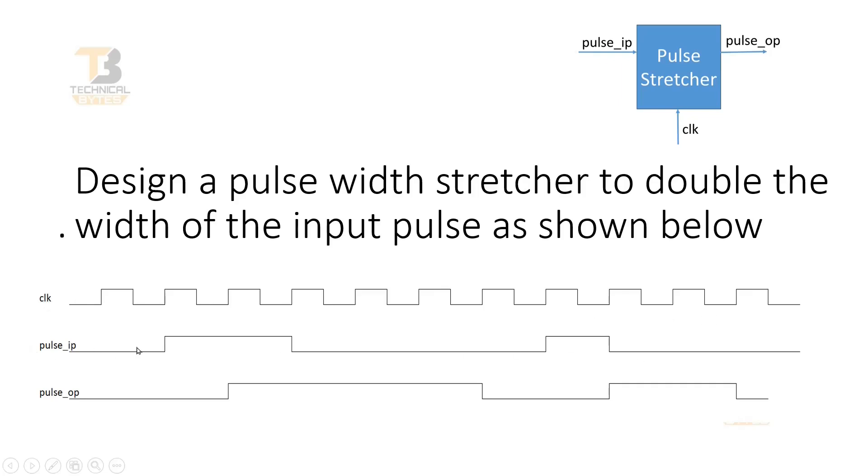So, the first pulse appears and its width is two clock cycles. And corresponding to this Pulse, this Pulse Stretcher will generate a Pulse at the Pulse Output signal which should have a width of four clock cycles. So, this is the output, expected output.